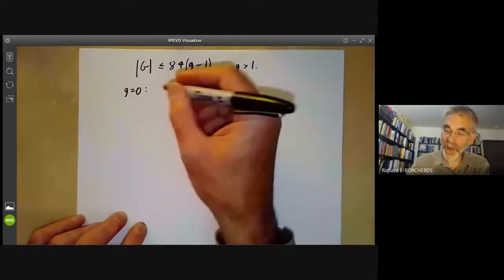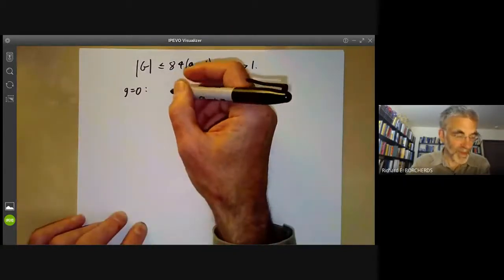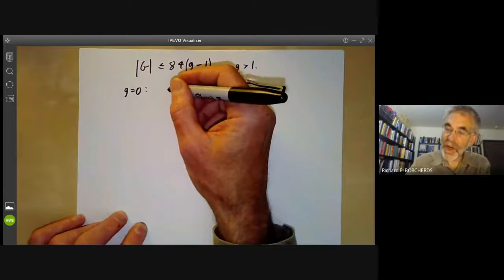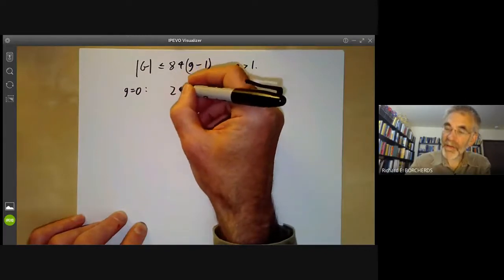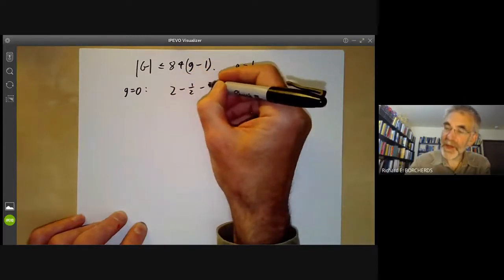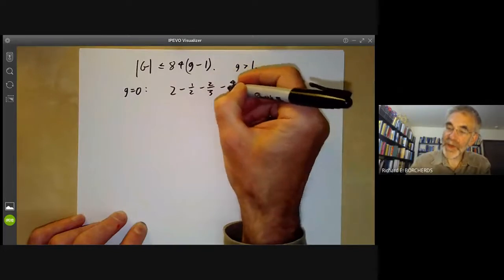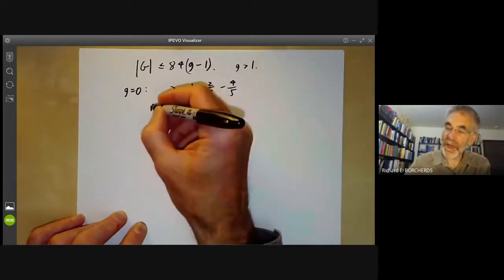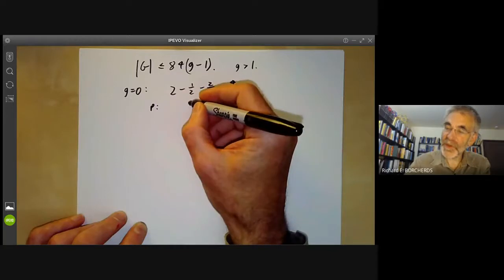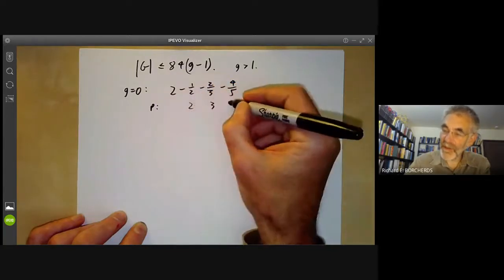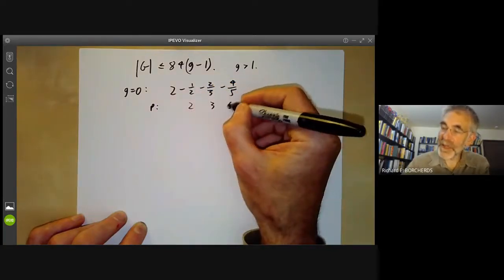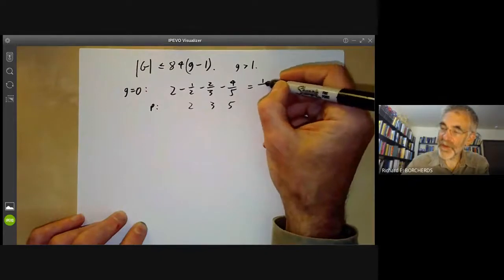For example, the smallest positive value turns out to be two minus a half minus two thirds minus four fifths corresponding to three points, three orbifold points of orders two, three, and five, and if you work this out it's equal to one over 30.